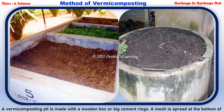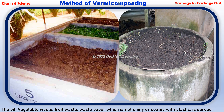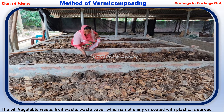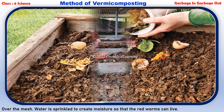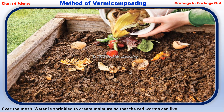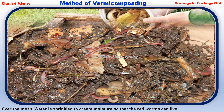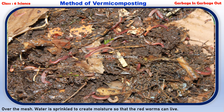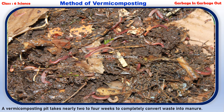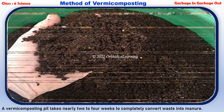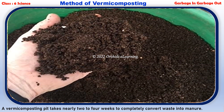A vermicomposting pit is made with a wooden box or big cement rings. A mesh is spread at the bottom of the pit. Vegetable waste, fruit waste, and waste paper that is not shiny or coated with plastic is spread over the mesh. Water is sprinkled to create moisture so that the red worms can live.